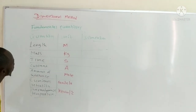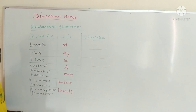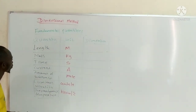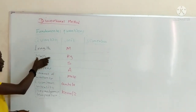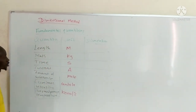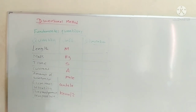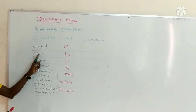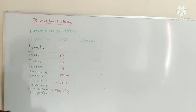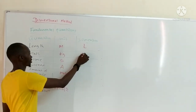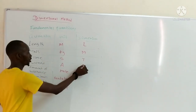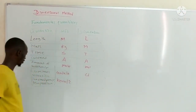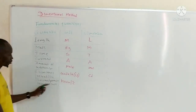The most important point we need is how we can have the dimension of each of these quantities. The dimension of length — we normally use the first letter of each quantity. So the first letter of length is L, so the dimension of length is L. The first letter of mass is M, so the dimension of mass is M. The first letter of time is T, so the dimension of time is T. For current we use A, amount of substance we use mol, luminous intensity which is candela we use cd, and thermodynamic temperature we use K.